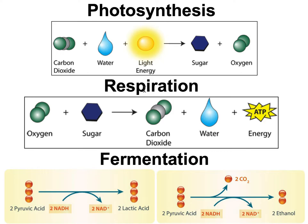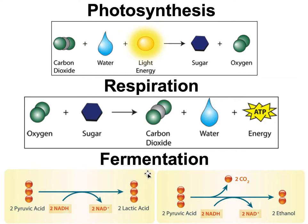Cellular respiration takes that sugar and gets the energy out of it in the form of ATP — the energy currency of the cell. It burns the sugar using oxygen so our cells can do work. Fermentation works alongside respiration: when oxygen isn't available, instead of going from glycolysis into the Krebs cycle and electron transport chain, we go into fermentation to keep glycolysis running. Fermentation is another way to get energy out of sugar so our cells can do work. Thanks so much for watching!